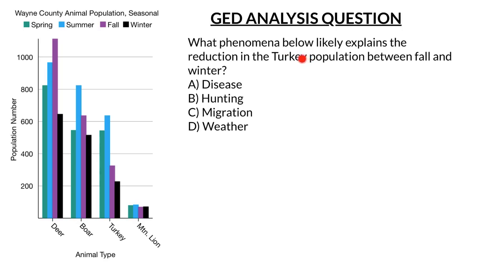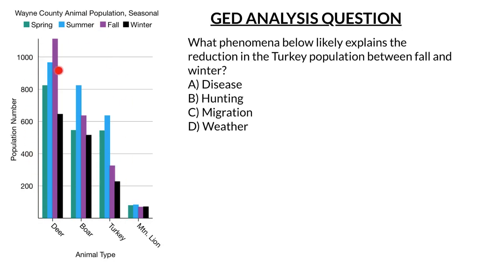The very first thing you want to do on these tests when you come across an informational graphic is jump into the chart first. Look at the title: Wayne County Animal Population Seasonal. This is animal population in this particular county, and it's seasonal. Then look at the legend — spring, summer, purple is fall, and black is winter. On the X-axis you have the type of animal: deer, boar, turkey, and mountain lion. On the Y-axis you have the population count, from 200 all the way up to 1,000. Now you know you're looking at a chart about Wayne County and the population of certain animals during certain seasons — and that is key to understand before you move on.